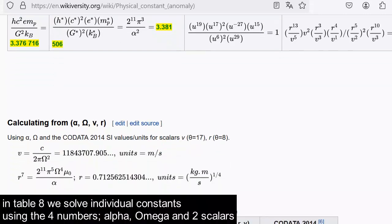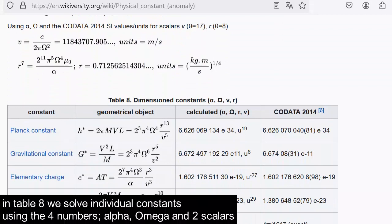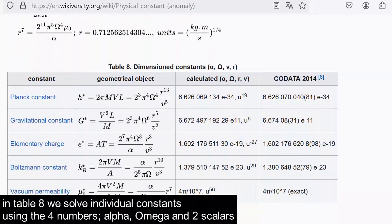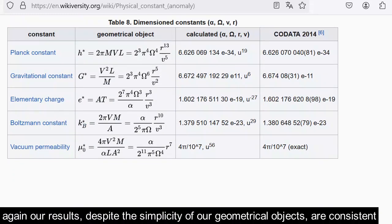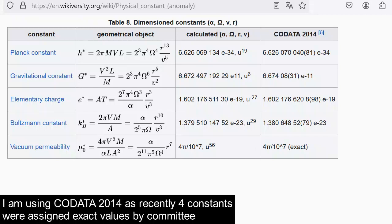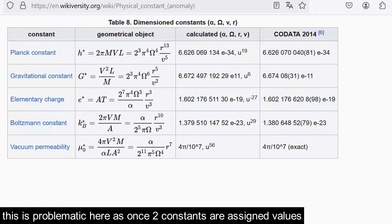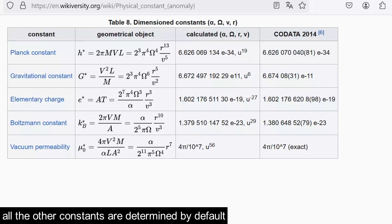In table eight, we solve individual constants using the four numbers: alpha, omega, and two scalars, and compare our calculated values with CODATA. Again, our results, despite the simplicity of our geometrical objects, are consistent. I am using CODATA 2014. As recently, four constants were assigned exact values by committee. This is probably problematic here, as once two constants are assigned values, all the other constants are determined by default. We cannot assign values to more than two constants.